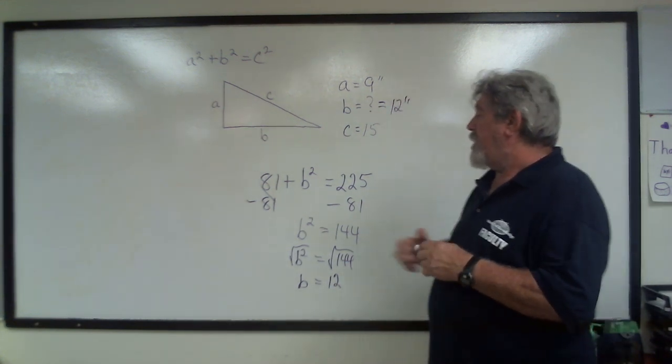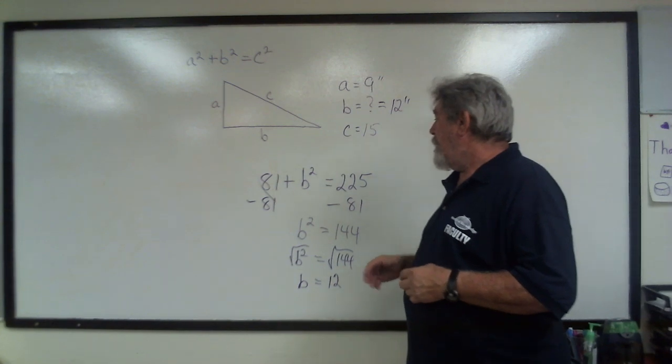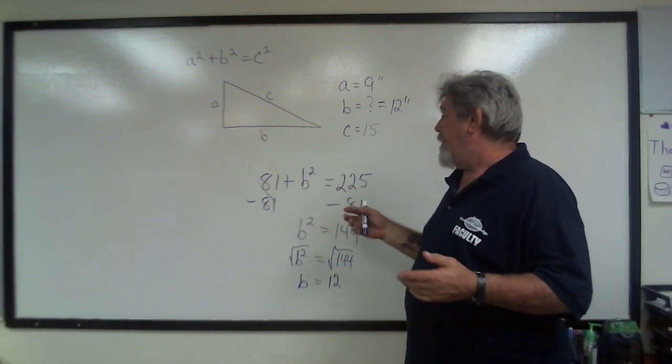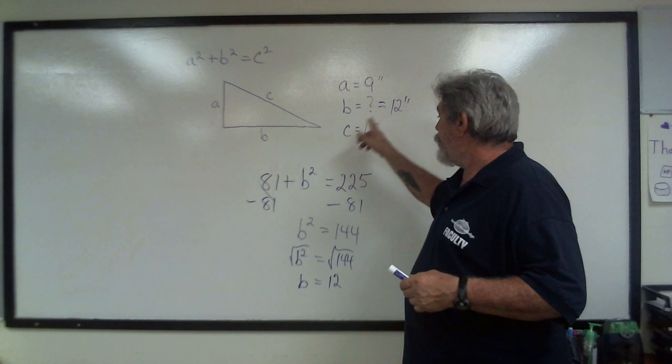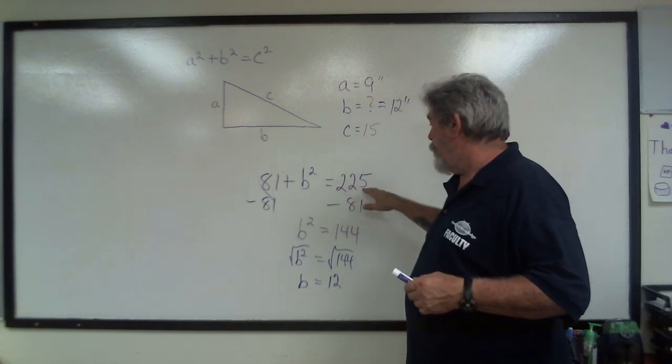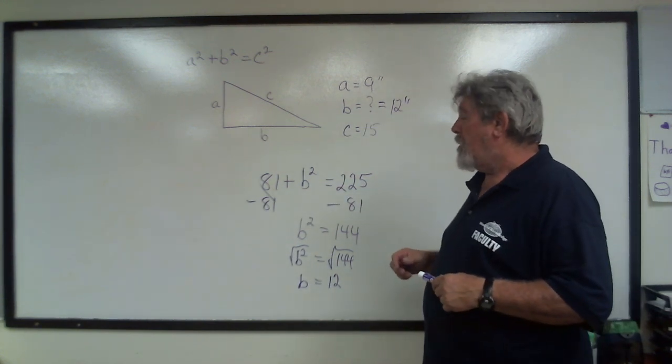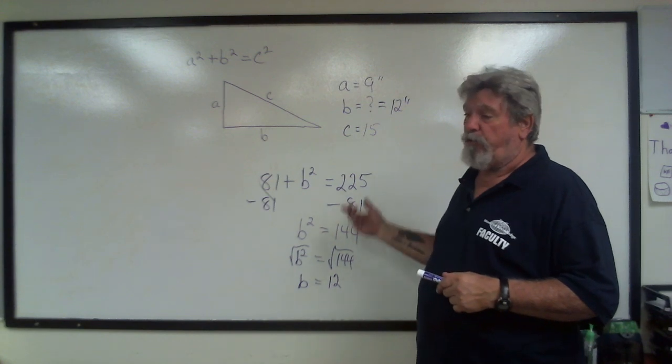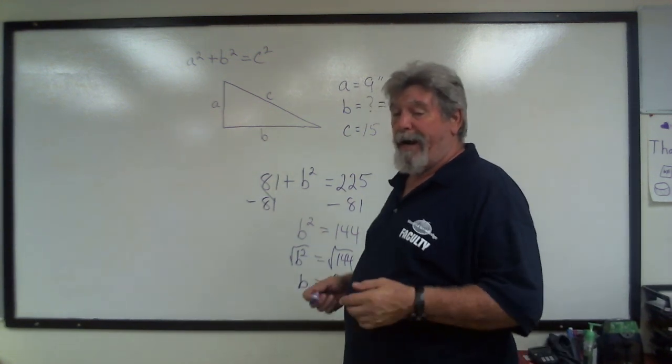And we could do the same thing with A. What we'll end up doing is just subtracting the B, which is 12, which is 144 from 225, and that'll leave us with 81. And the square root of 81 is 9.